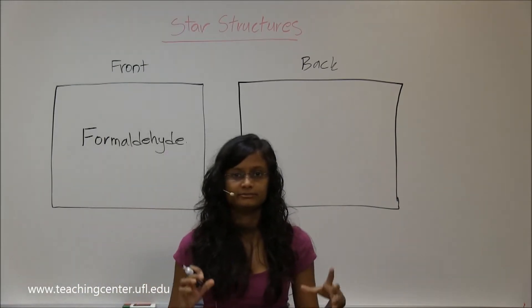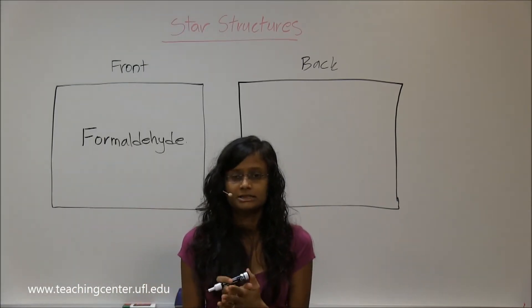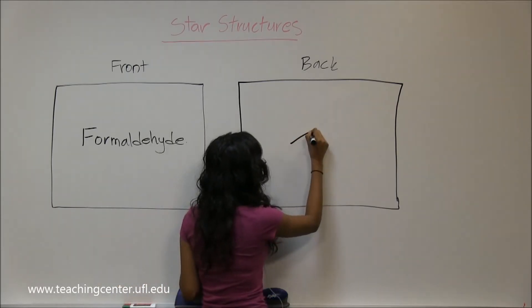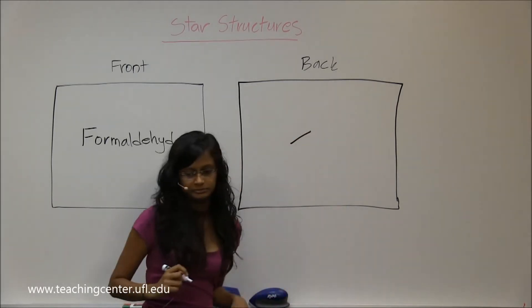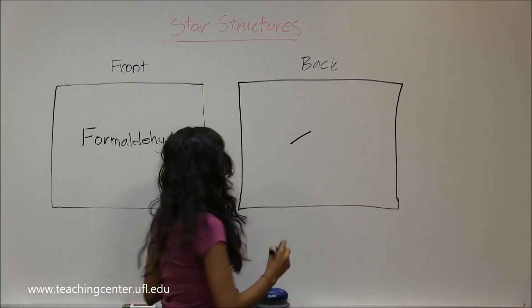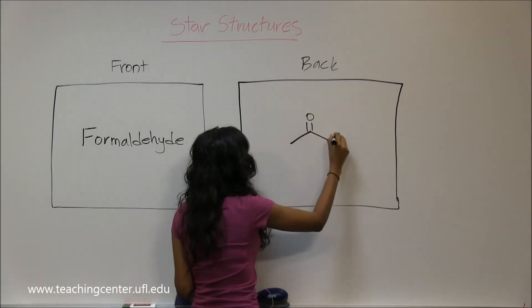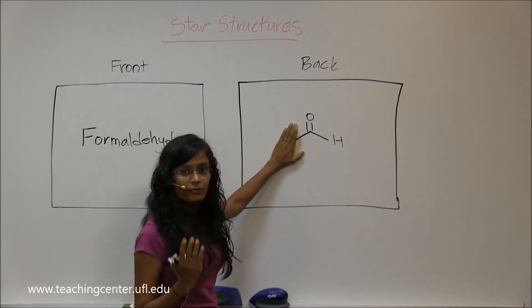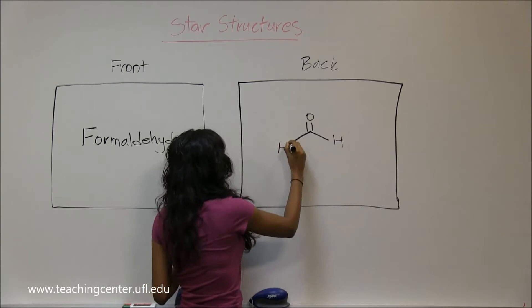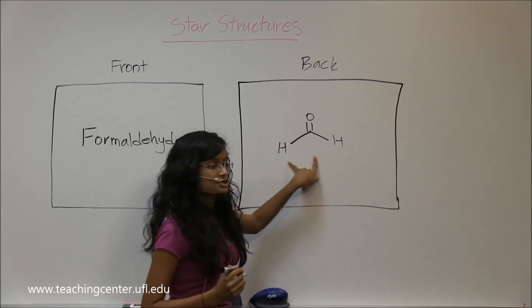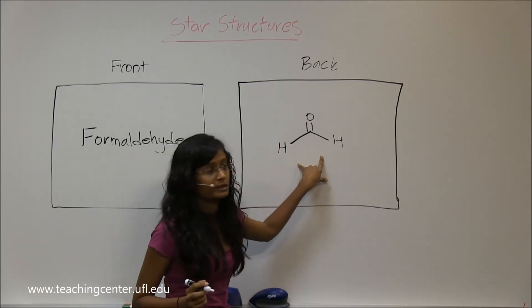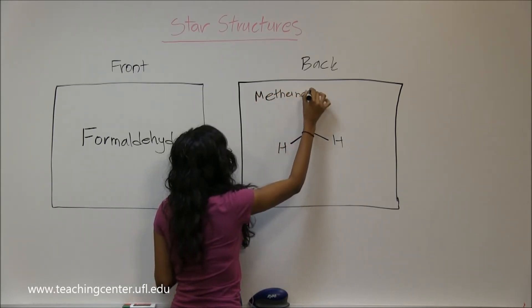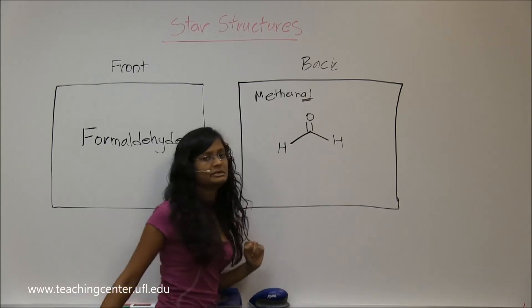Formaldehyde is the smallest aldehyde possible. You only have one carbon that has an aldehyde, so you don't have anything here. But carbon has to make four bonds, so there are two hydrogens for formaldehyde. So it is methanal, the IUPAC name, and -AL tells me it's an aldehyde group.